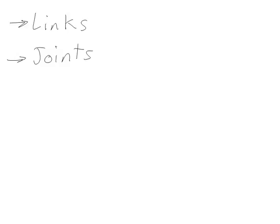Another word that I mentioned in the first video but did not define is the term manipulator. Manipulator is another term for a robot arm. We use the term manipulator instead of arm for robots because a robot manipulator might not look anything like a human or animal arm. The manipulator consists of all of the robot links connected together by joints and ending in another new term, the end effector.